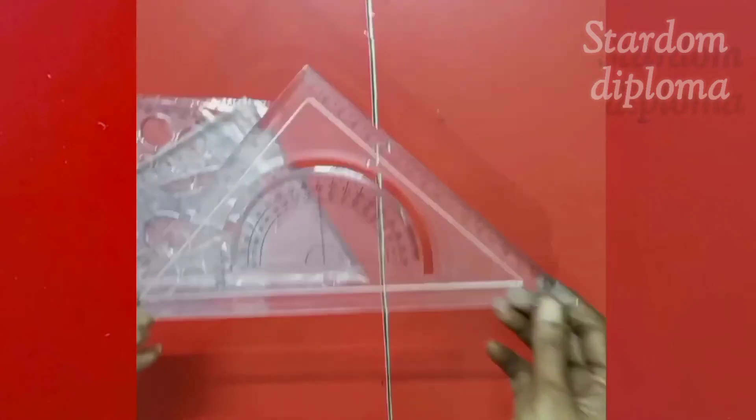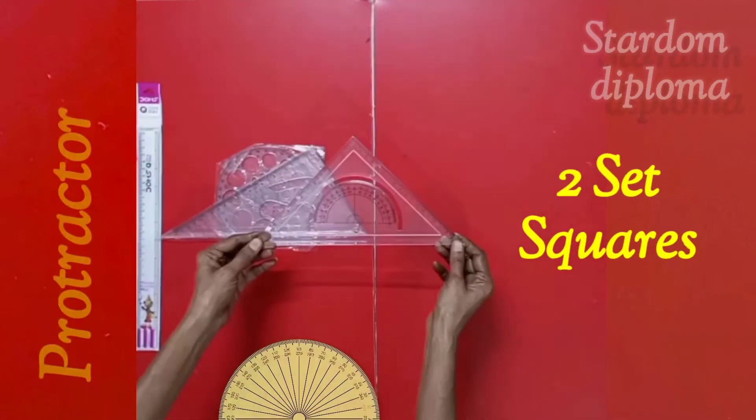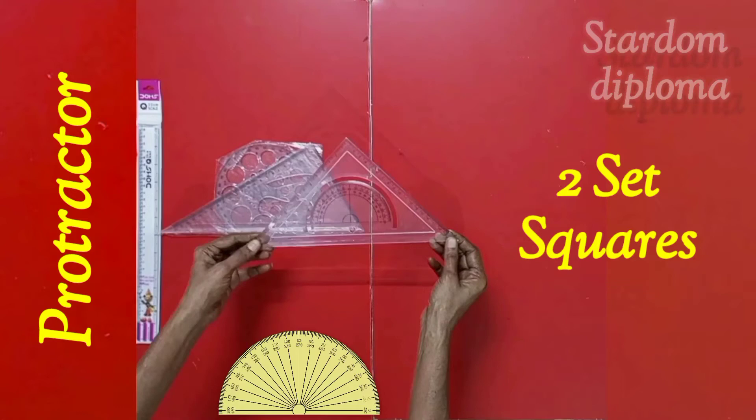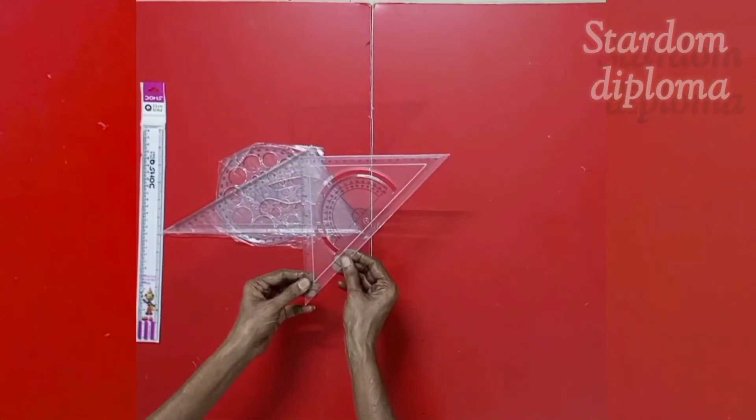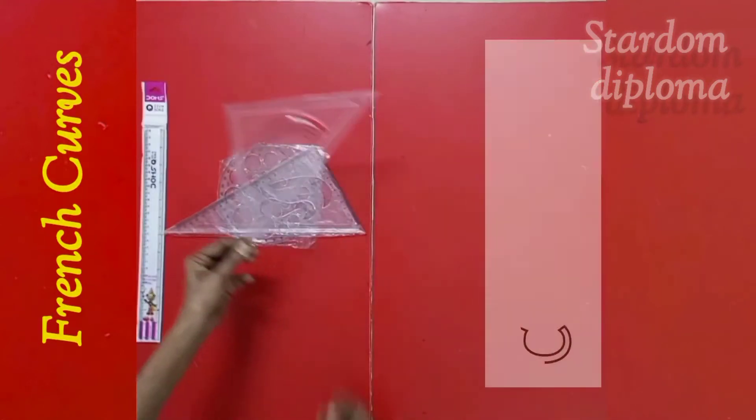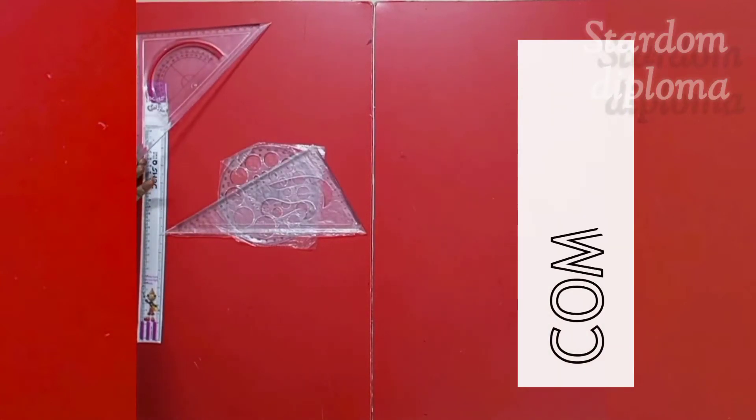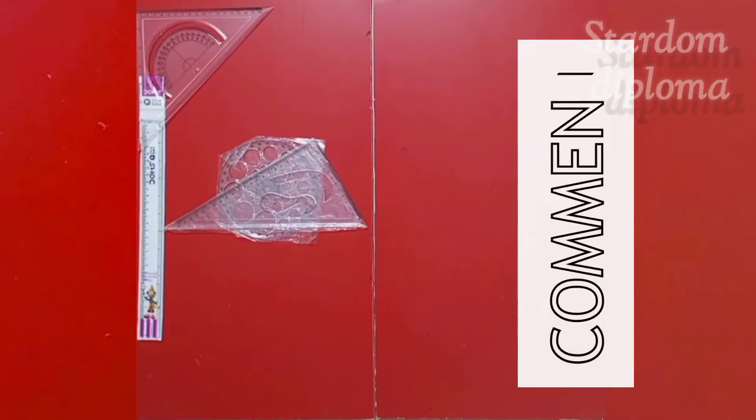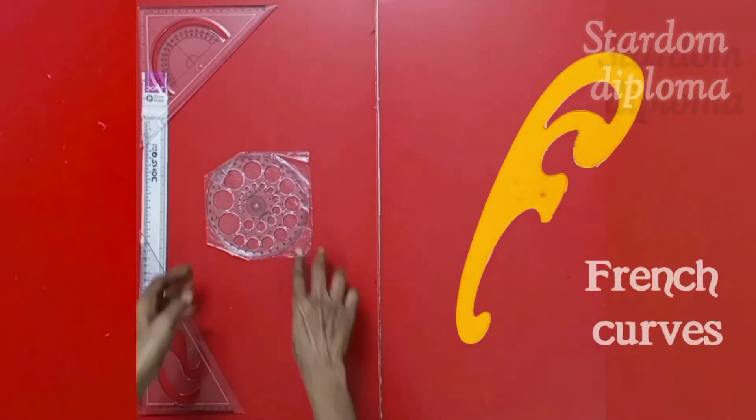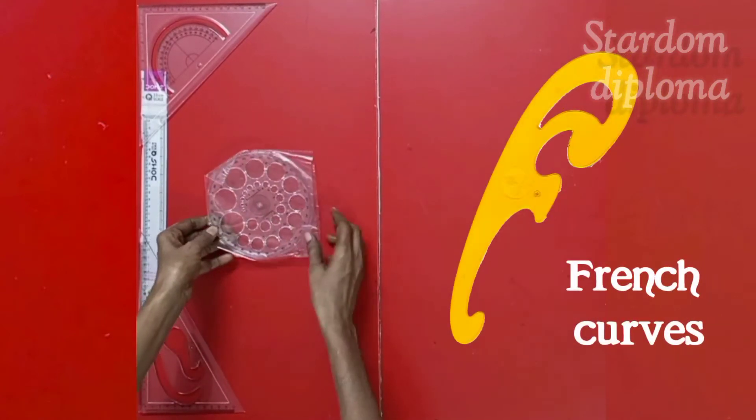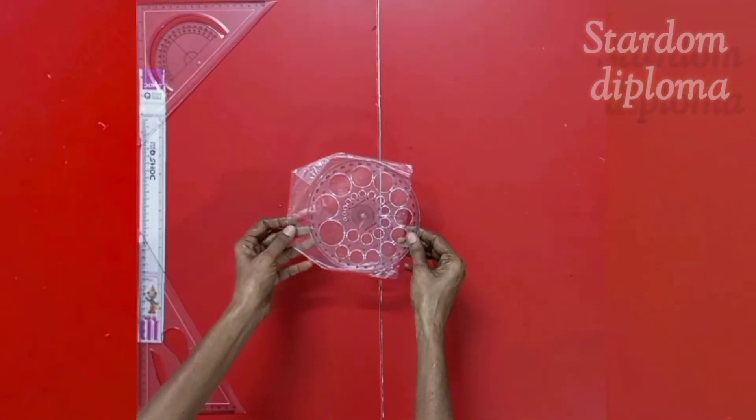And next, we are having two set squares. The smaller one, we are having a protractor in it. And in a bigger set square, we are having French curves. Friends, if you are having any doubts or suggestions, post your comments in the comment section. These French curves we generally use to draw curve lines.